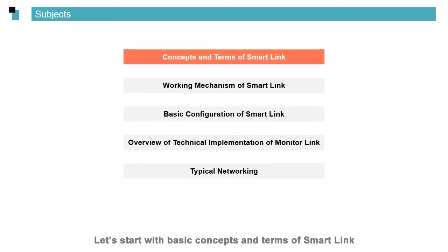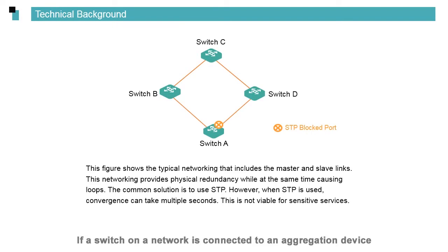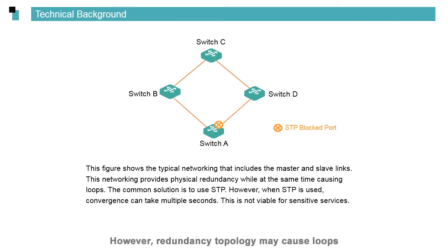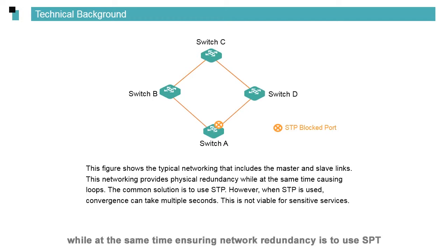Let's start with basic concepts and terms of smart link. If a switch on the network is connected to an aggregation device, such an unreliable network connection is prone to single points of failure and network interruptions. Therefore, in actual network deployment, we use the redundancy topology, as shown in this figure. However, redundancy topology may cause loops. The most common way to address the loop issue while ensuring network redundancy is to use STP.